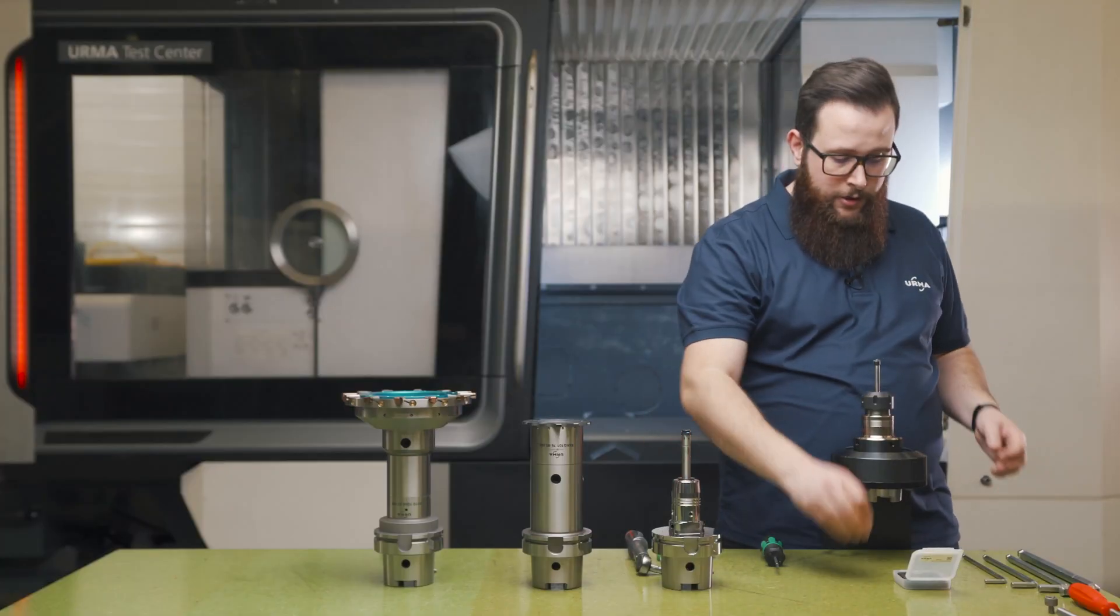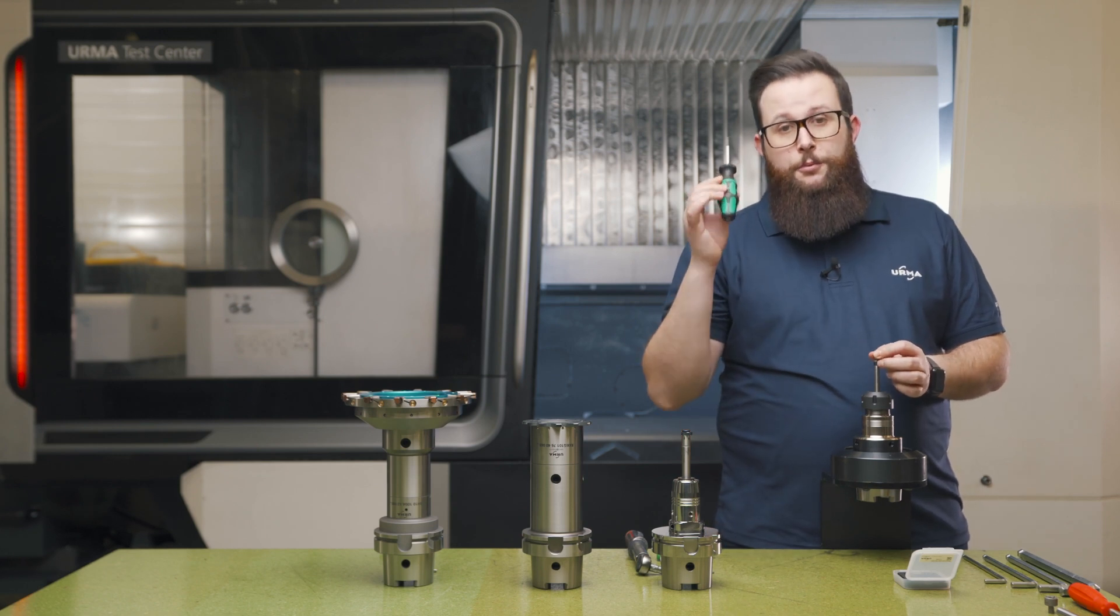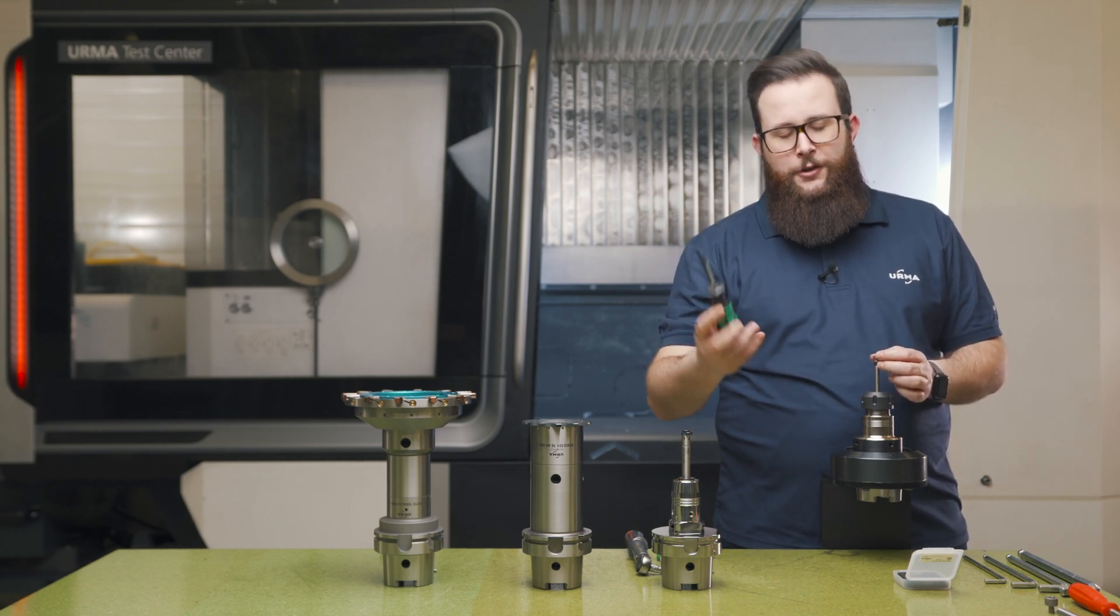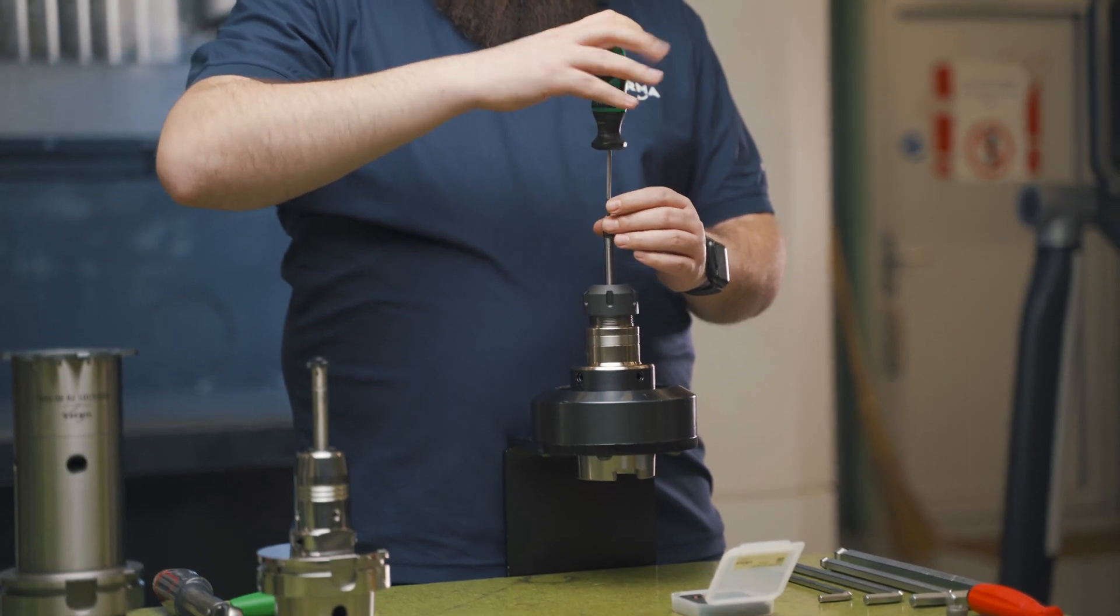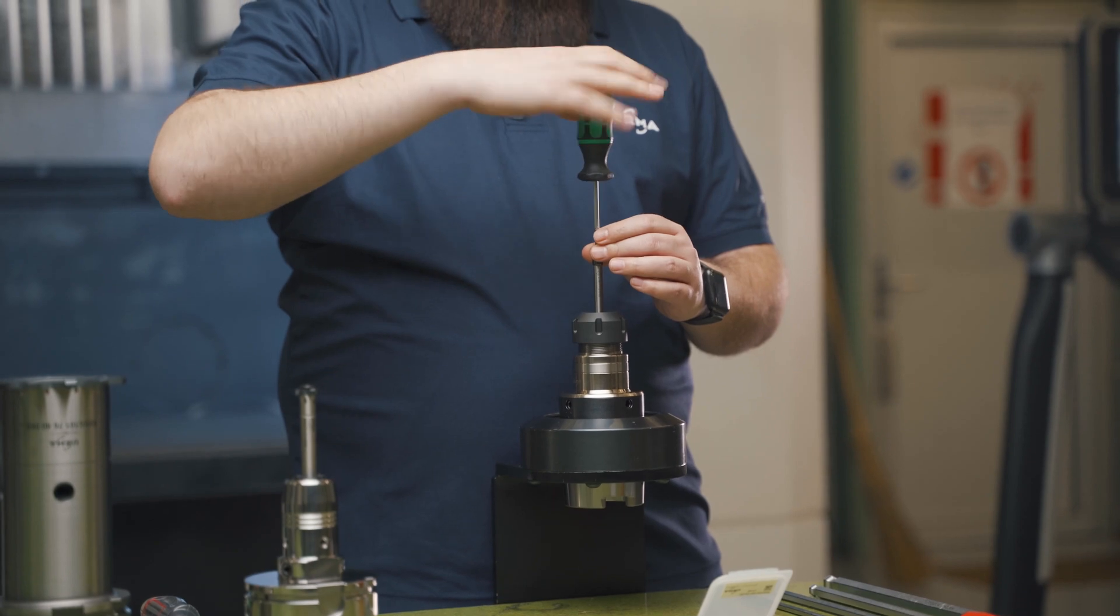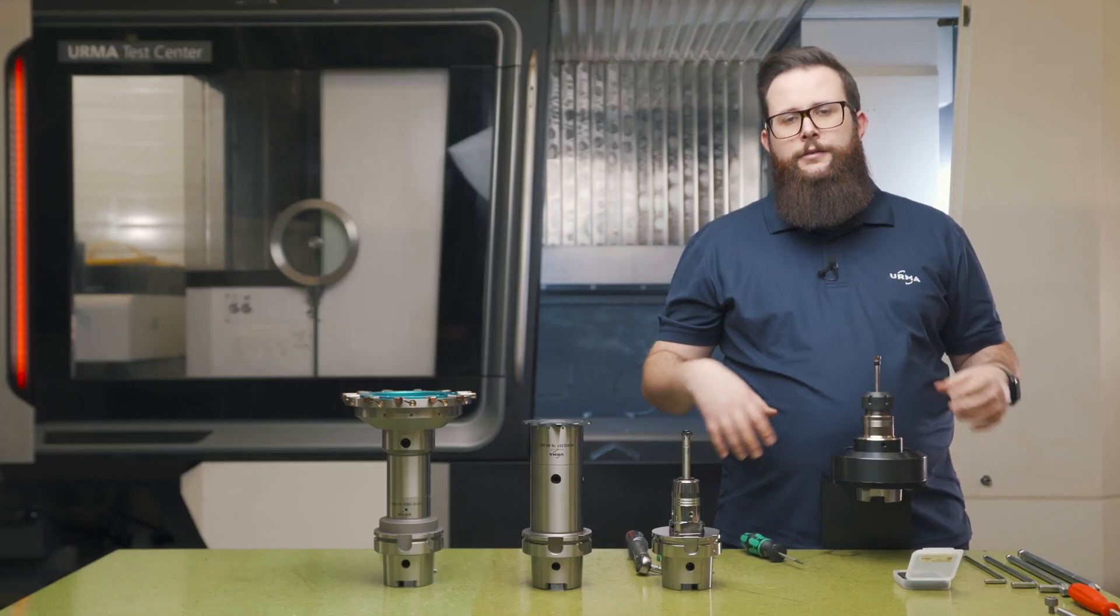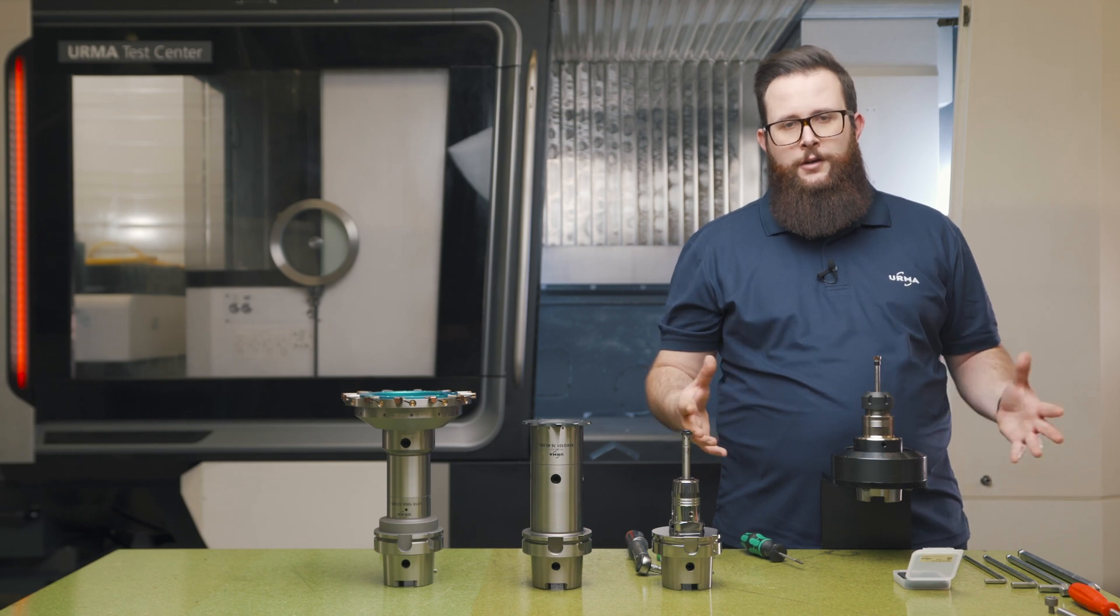So simply take a new insert, put it on your insert holder, use the provided torque screwdriver, and tighten it up. You don't have to reset your tool length, you don't have to reset your run out again.